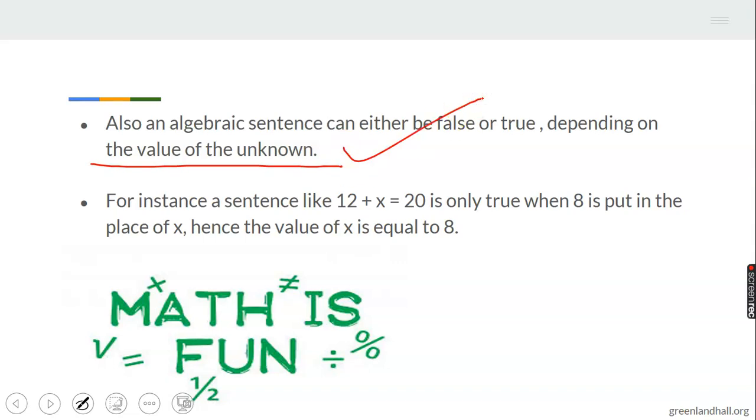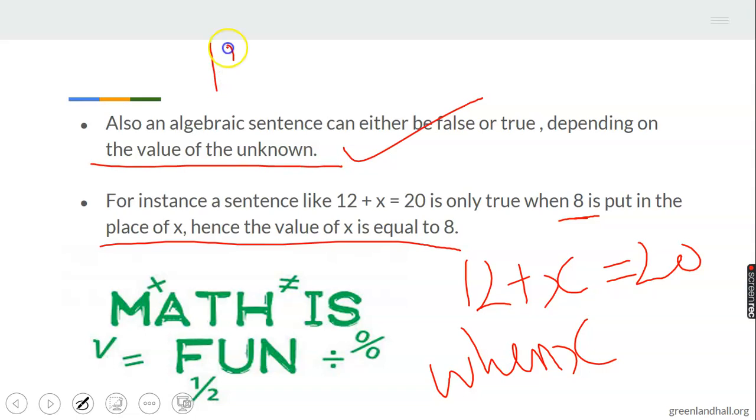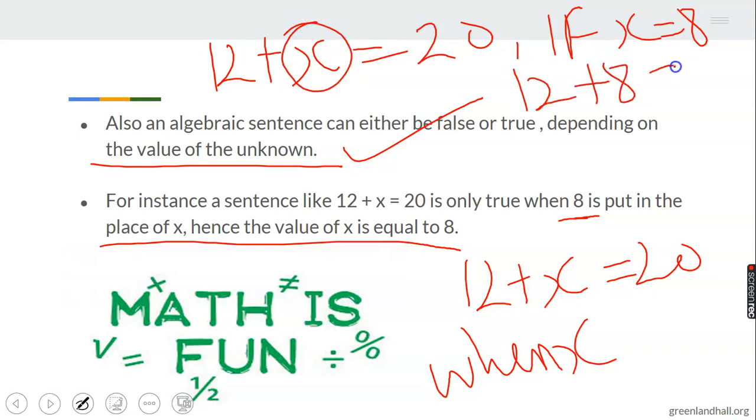A number or algebraic sentence can be false depending on the value of the unknown. For example, we have 12 plus x is equal to 20. This is only true when we find out the value of x. It is true when 8 is put in the place of x. 12 plus x equals 20, it's only true if x equals 8. Let's see: 12 plus 8 gives me 20. So you have to check, and how we check is by solving.